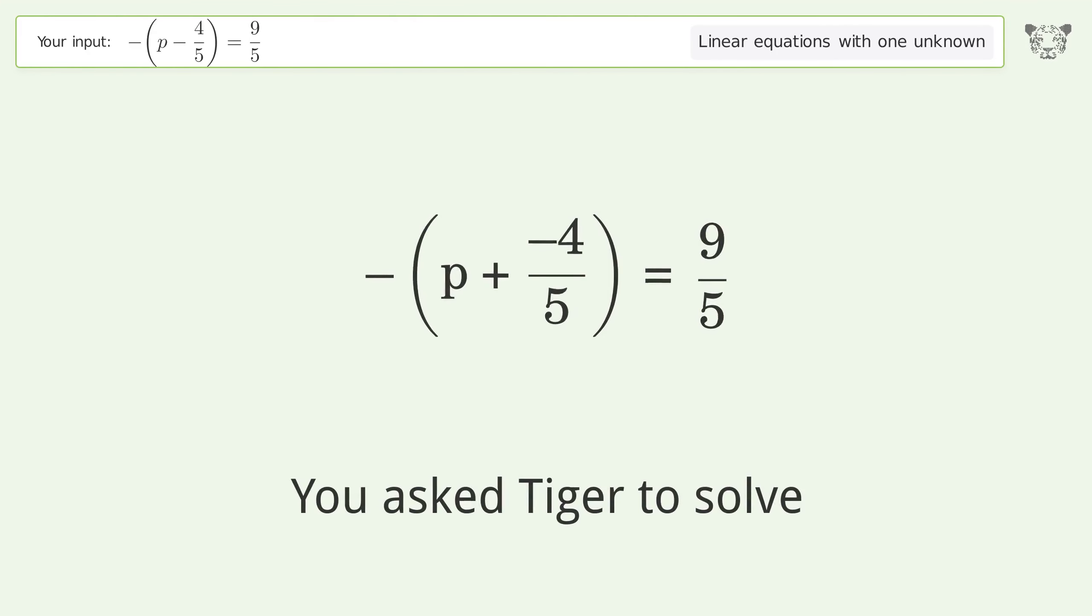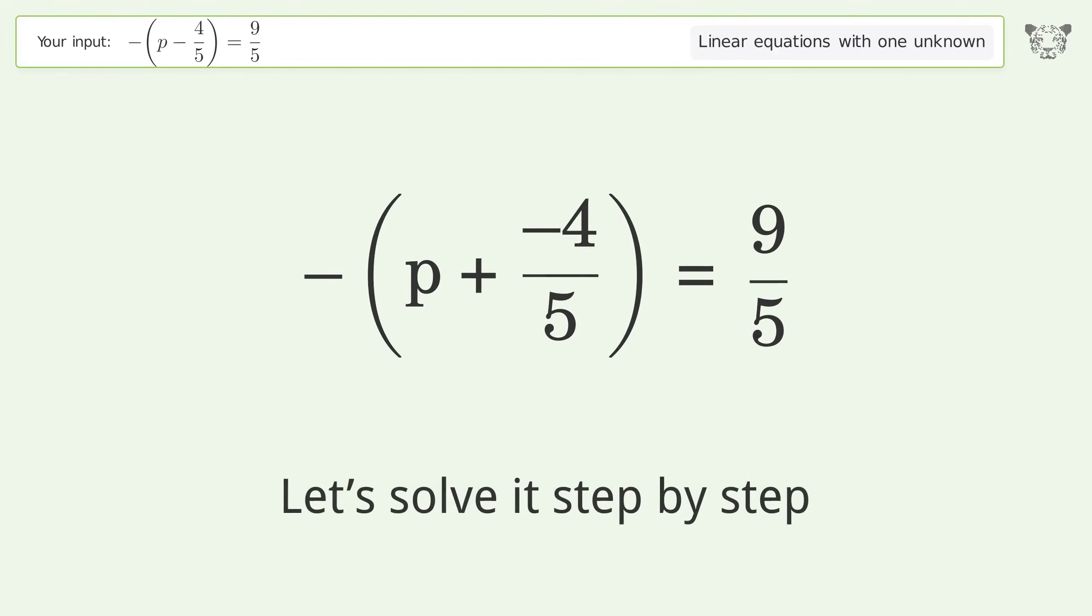You ask Tiger to solve this, which deals with linear equations with one unknown. The final result is p equals negative one. Let's solve it step by step. Simplify the expression, expand the parentheses.